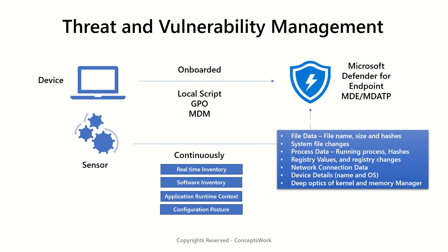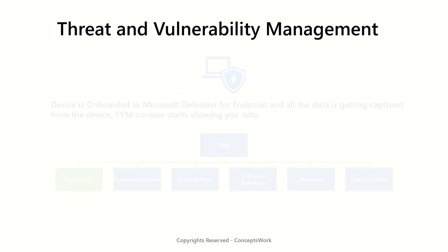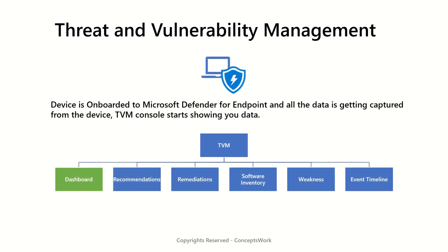The purpose of the TVM console is to organize this information into six different management options. The first one is the dashboard — an overall view of exposures and weaknesses of your endpoints. The second one is recommendations — basically a list of all the recommendations based on the inventory which has been captured.